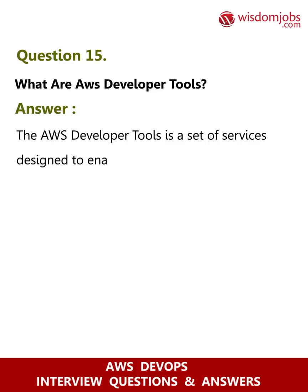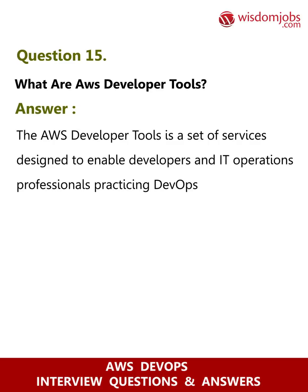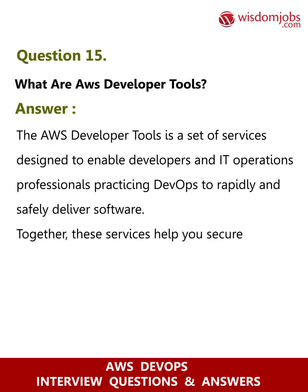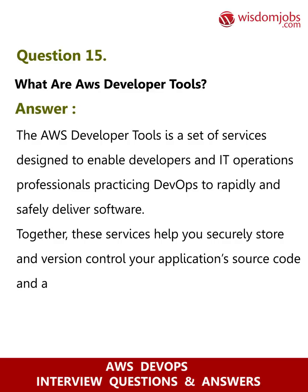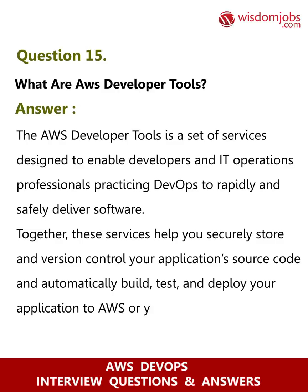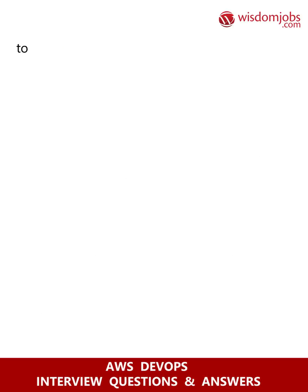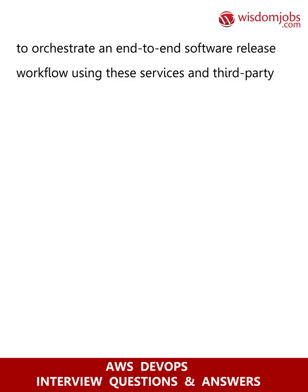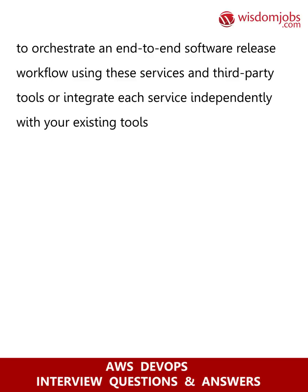Question 15: What are AWS Developer Tools? Answer: The AWS Developer Tools are a set of services designed to enable developers and IT operations professionals practicing DevOps to rapidly and safely deliver software. These services help you securely store and version control your application source code, and automatically build, test, and deploy your application to AWS or on-premises. You can use AWS CodePipeline to orchestrate an end-to-end software release workflow using these services and third-party tools, or integrate each service independently with your existing tools.